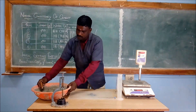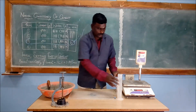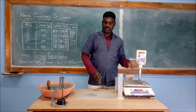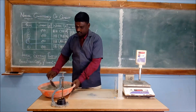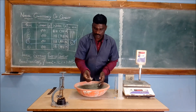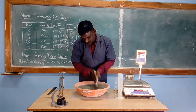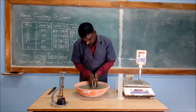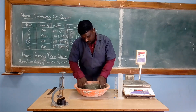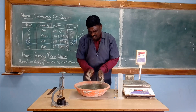This is cement. The measuring jar consists of water, and we have a weighing balance. Now we have to take the cement and remove the lumps. Lumps should be removed.